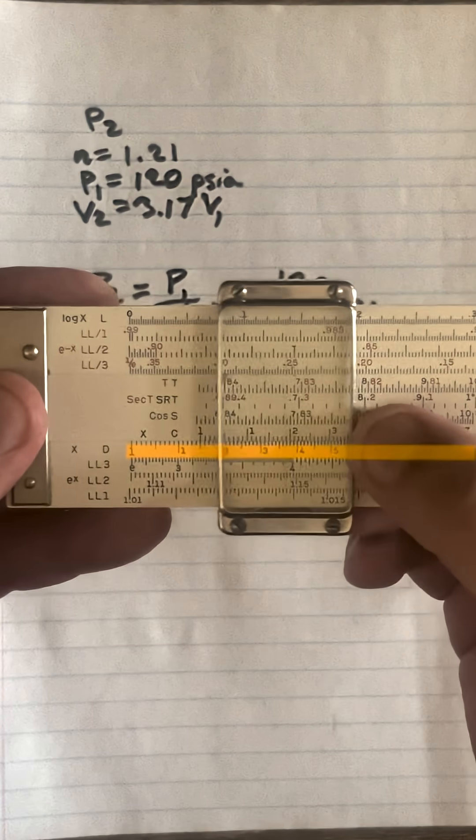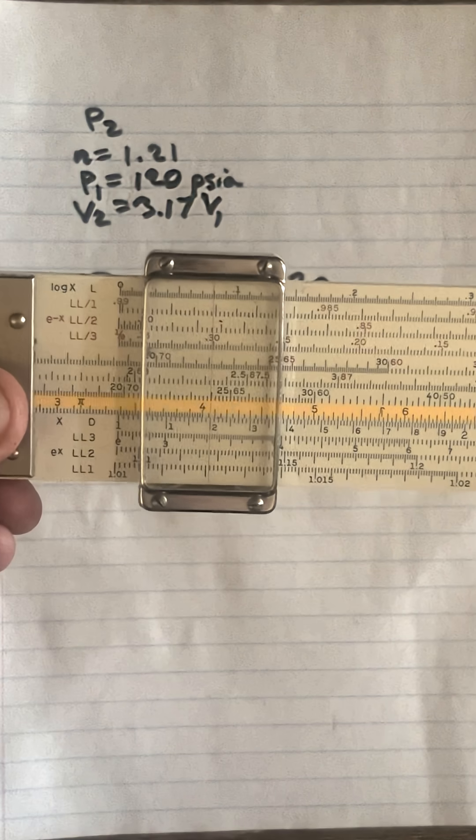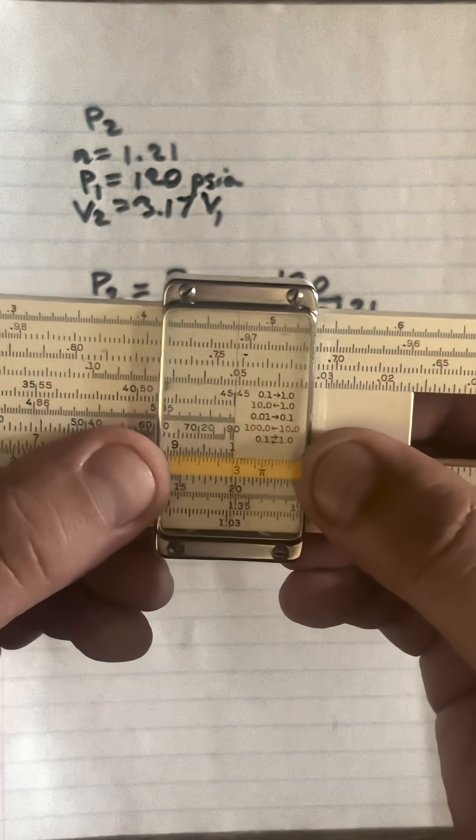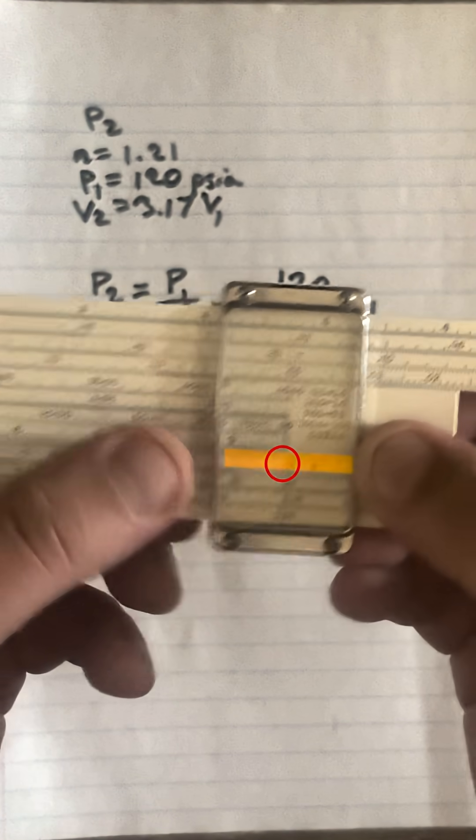So we're going to do our basic division on the D scale. We'll go to 120 and on our C scale, we'll slide over to 4.04. And if we move to the right index, we will be at 29.7 on the D scale.